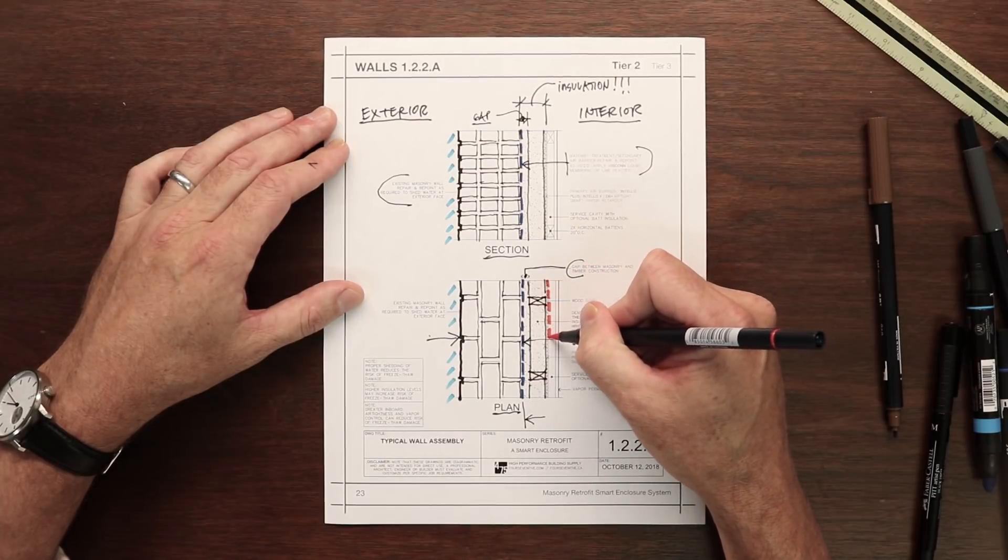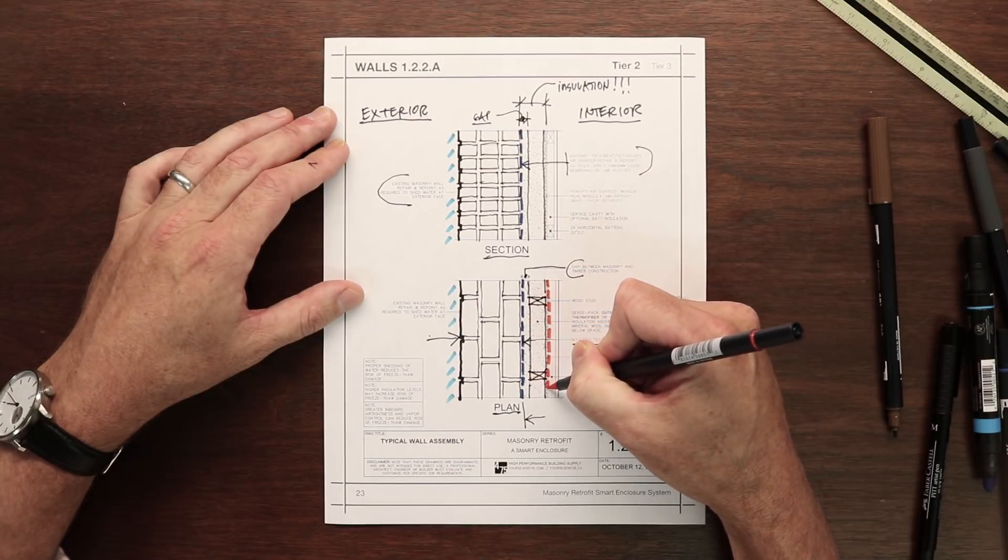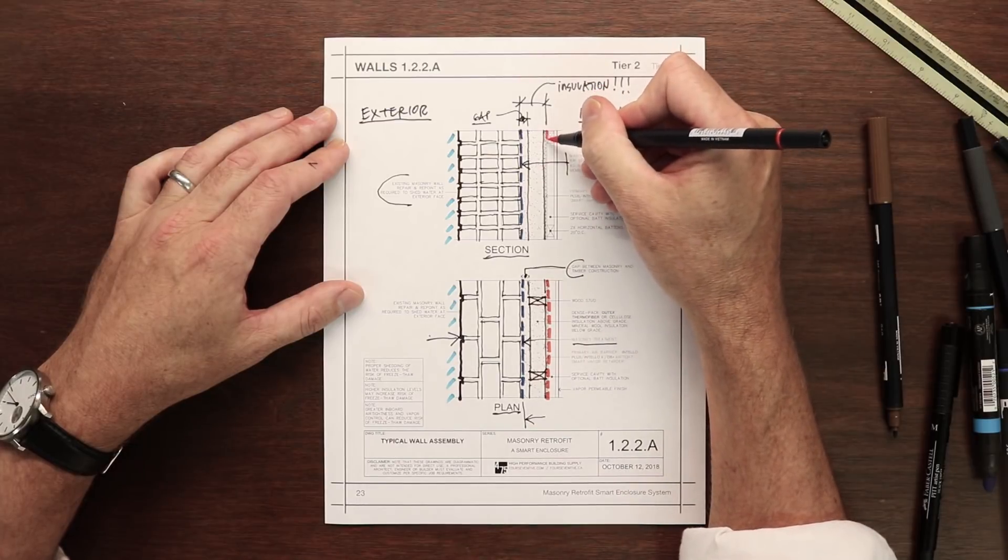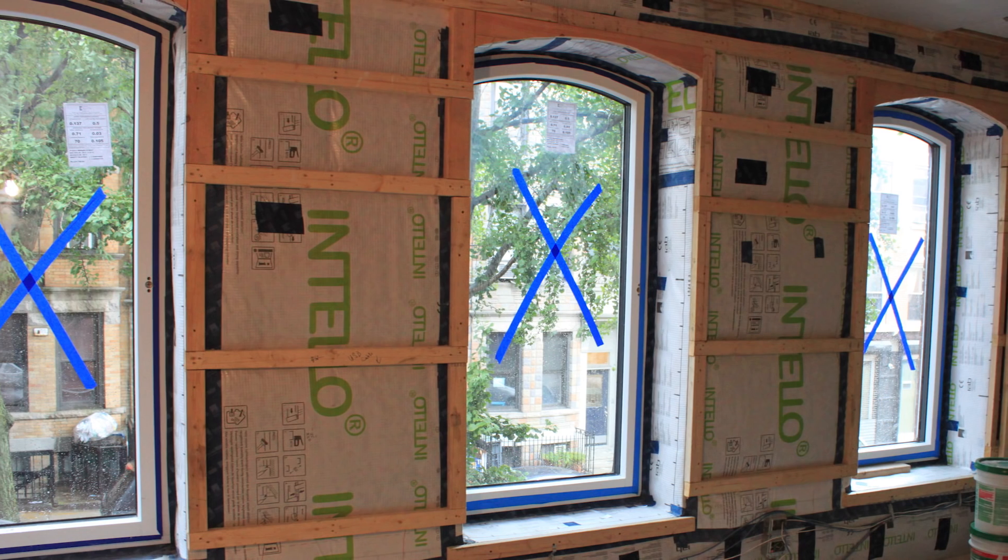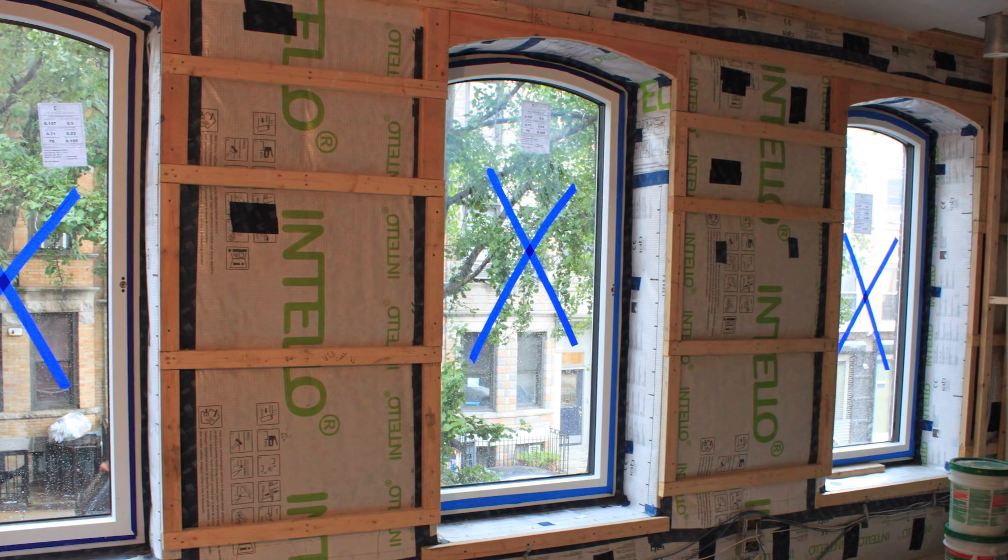we want to install the primary air barrier, which does double duty as a smart vapor retarder, and it's called Antello Plus. It gets installed on the interior face of the wood framing, where it will keep the conditioned air in the conditioned space.